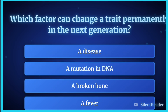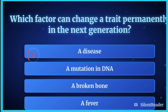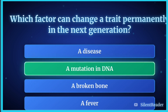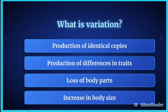Which factor can change a trait permanently in the next generation? The correct answer is a mutation in DNA. What is variation?